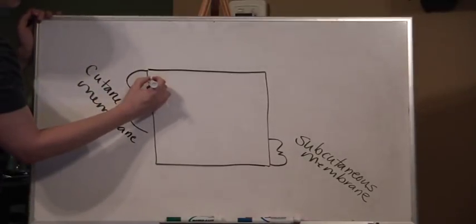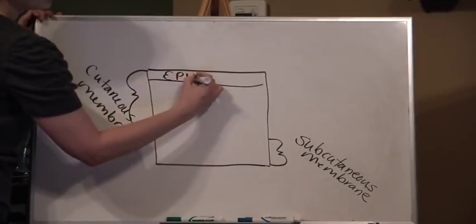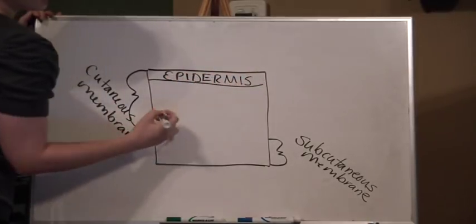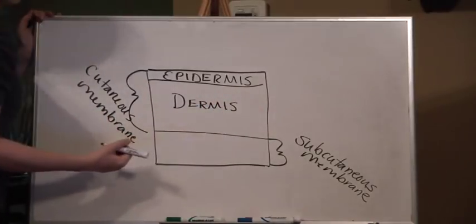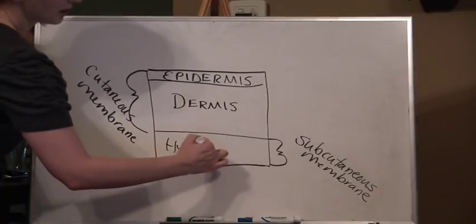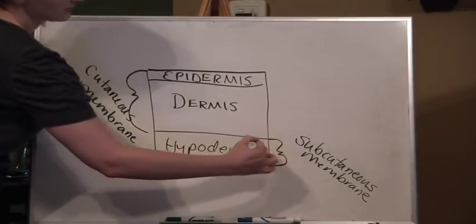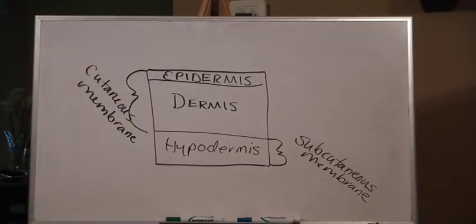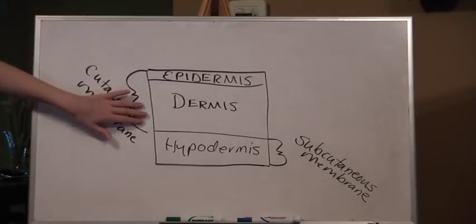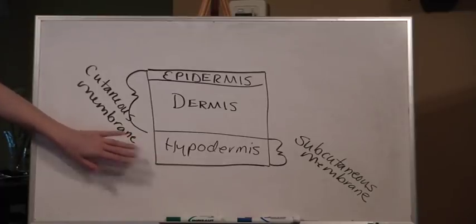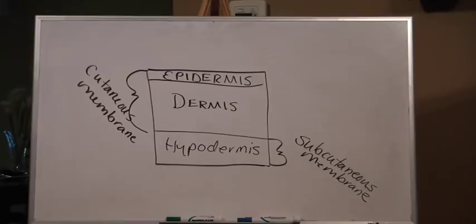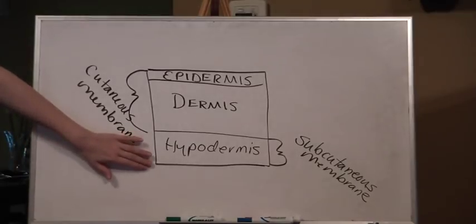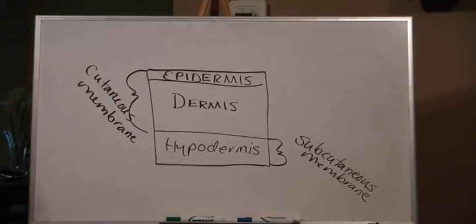The cutaneous membrane is made up of two layers. The top layer is the epidermis, the middle layer is the dermis, and the bottom layer, the subcutaneous membrane, is also known as the hypodermis. The cutaneous membrane, made up of the epidermis and dermis, is the main bulk of the skin, and the underlying subcutaneous membrane is mainly fat.